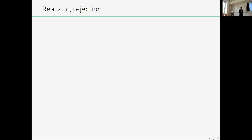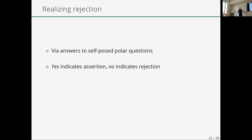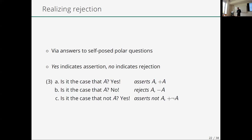How are assertion and rejection realized? Bilateralists typically say rejection can be realized by answers to self-posed polar questions: 'yes' indicates assertion and 'no' indicates rejection. So 'Is it the case that A? Yes' realizes the assertion of A (denoted +A); 'Is it the case that A? No' realizes a rejection of A (denoted −A); 'Is it the case that not-A? Yes' realizes the assertion of not-A (denoted + not-A). In particular, although rejection and negative assertion are interderivable, they should be distinguished — they are not the same.